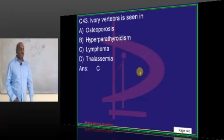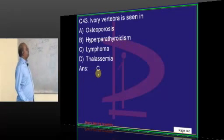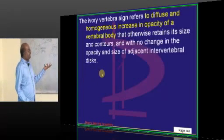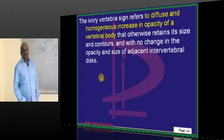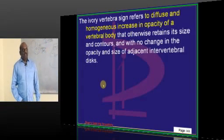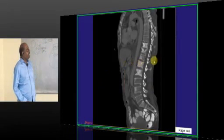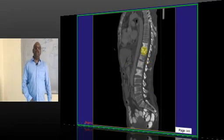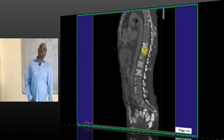Where do you see ivory vertebrae? Radiology is a subject that many people think is very logical, and it is logical — no doubt. But to read radiology for exams, every situation can have 10 causes.